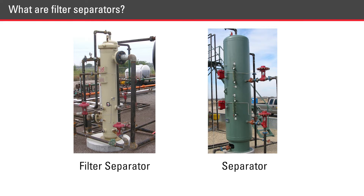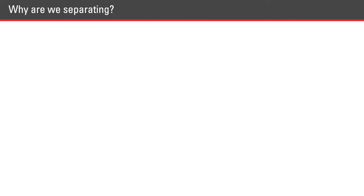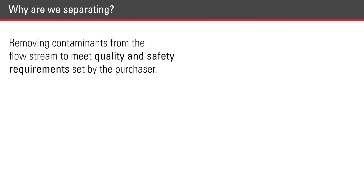A filter separator differs from a standard separating vessel in that it uses filter elements to remove contaminants rather than using mechanical devices. We are removing contaminants from the flow stream to meet quality and safety requirements set by the purchaser, which must be removed before it can be sold.